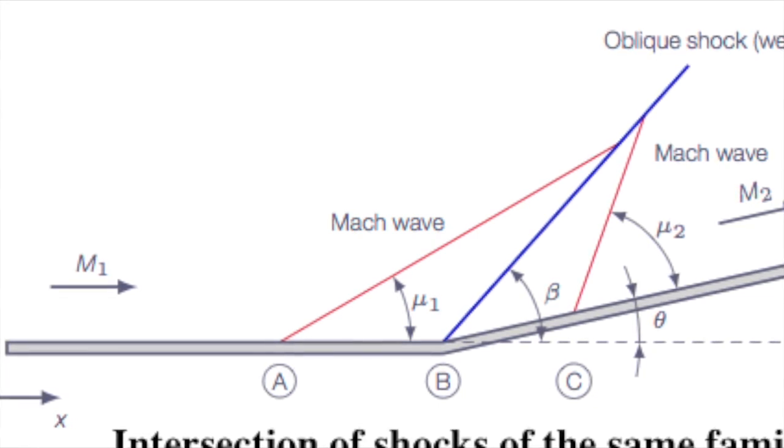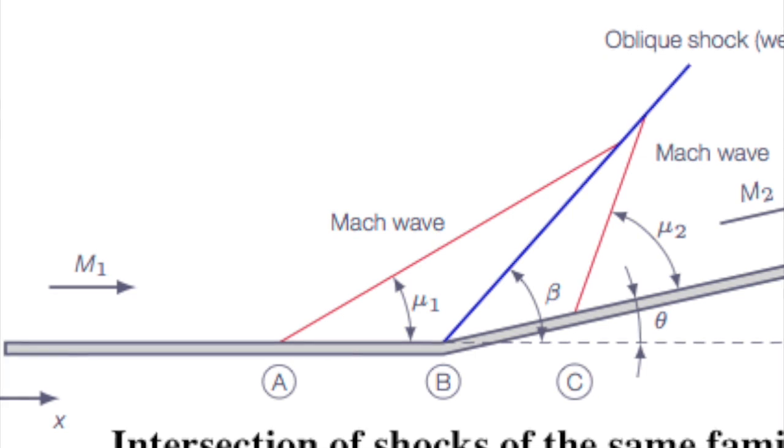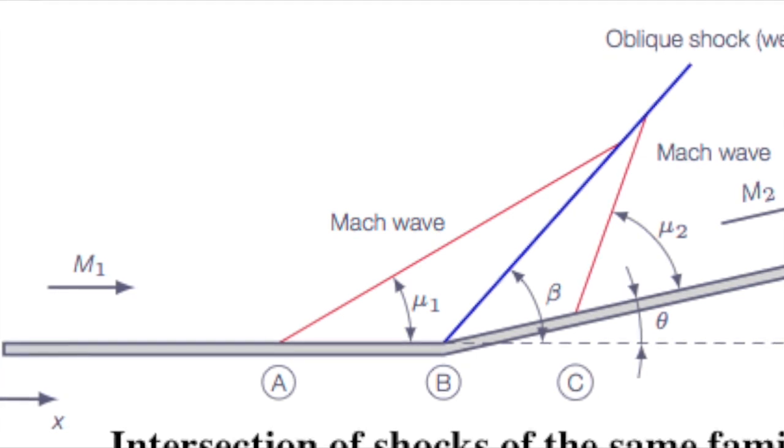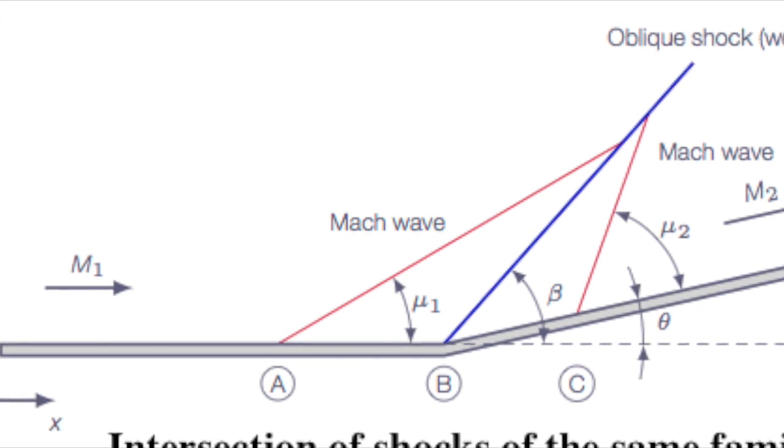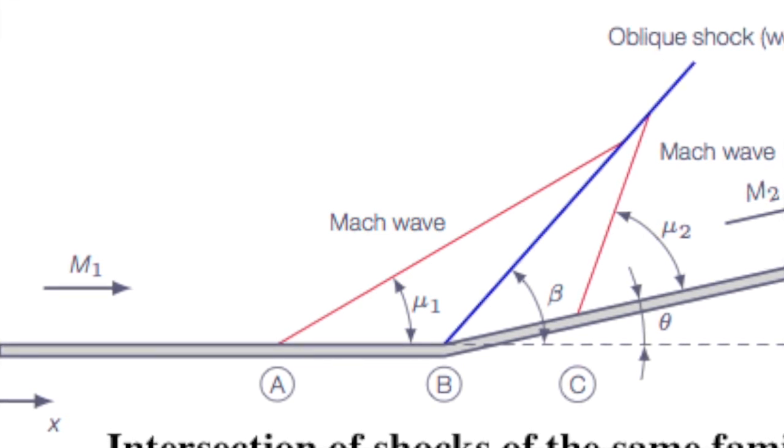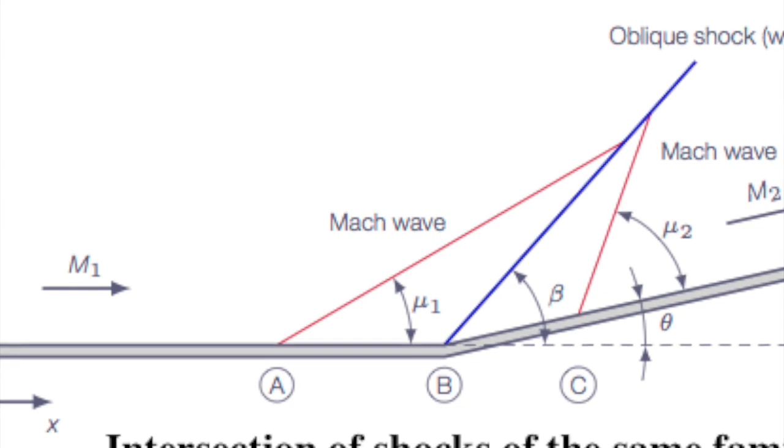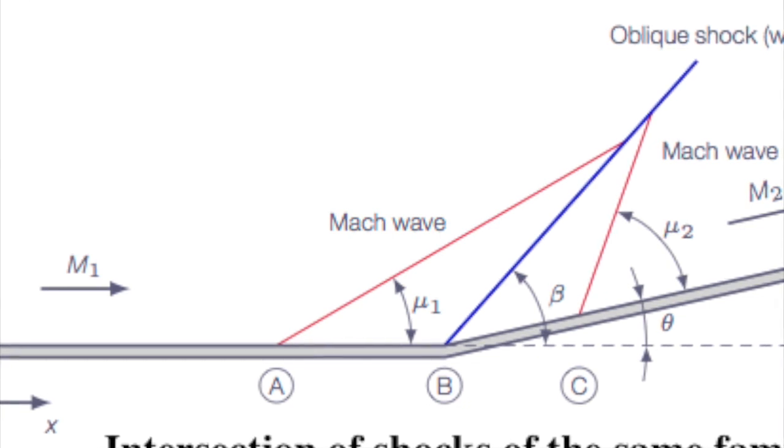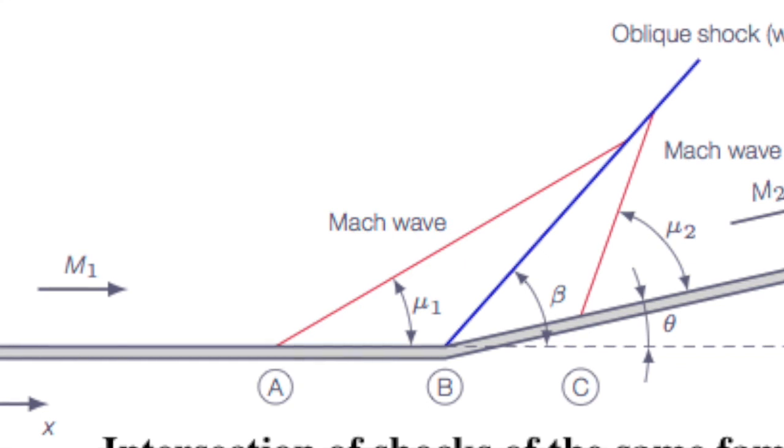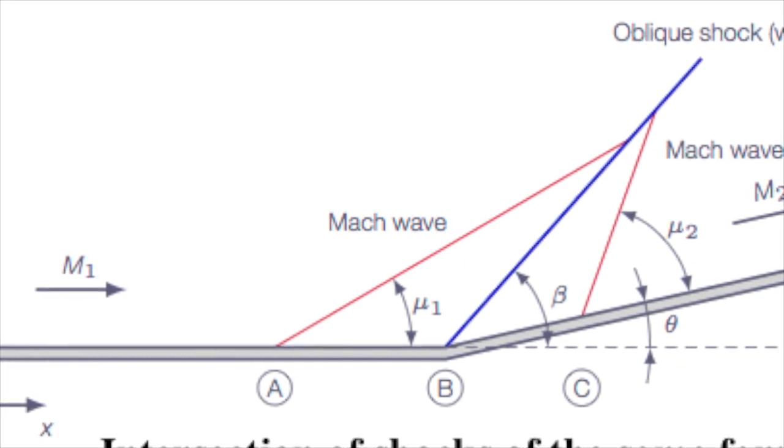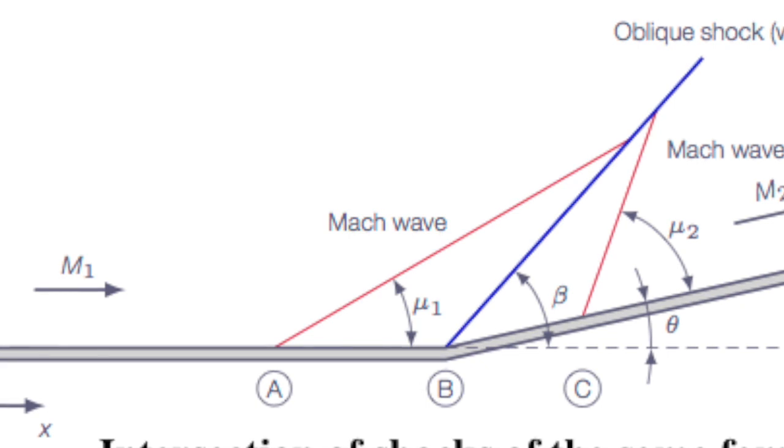However, it is generally not possible to find a single shock CD that will give simultaneously the same pressure and flow deflection as two intermediate shocks AC and BC with both systems starting from the same upstream conditions in region 1. Therefore, nature removes this problem by creating a weak reflected wave from the intersection point C.